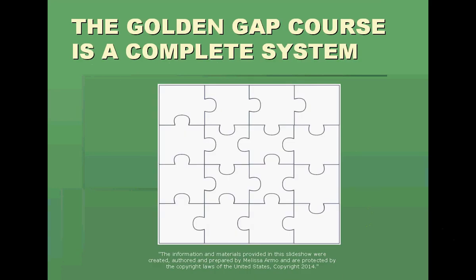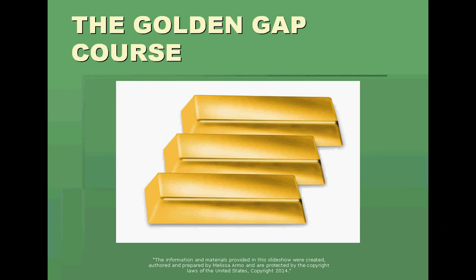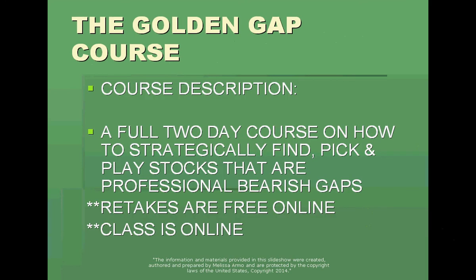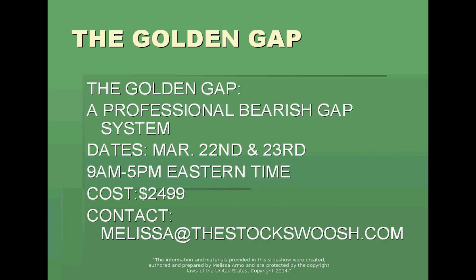I teach a class called the Golden Gap Course. It's a complete system that teaches you how to trade — it teaches you directional bias and how to trade successfully with directional bias. It's a full two-day course on how to strategically find, pick, and play stocks using professional bearish gaps. Retakes are free and the class is online, so you can be anywhere in the world and any time zone. The class is March 22nd and 23rd from 9 a.m. to 5 p.m. Eastern Time. The cost is $24.99. Email me at melissa@thestockswoosh.com for more information.